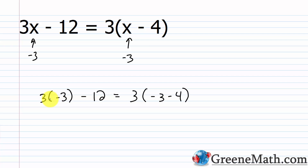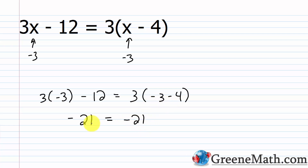3 times negative 3 is negative 9. Negative 9 minus 12 is negative 21. On the right, negative 3 minus 4 is negative 7, and 3 times negative 7 is negative 21. Again, the left and right sides are the same value.